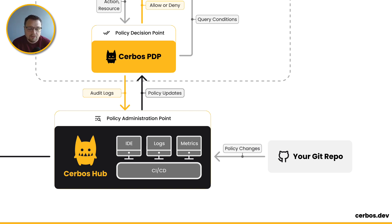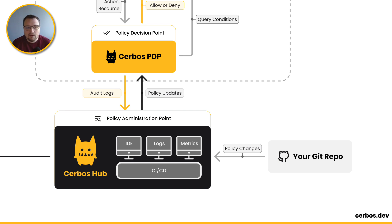SERBOS Hub also enables you to work and iterate on your policies through our policy IDE and policy playground. You can update, change, and validate your policies inside SERBOS Hub. When you're done, push those out to your Git repo, which then kicks off the distribution process.